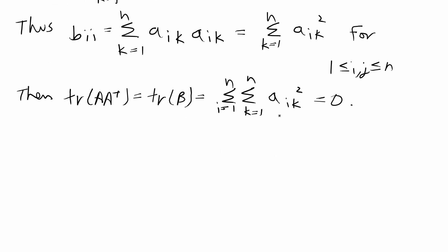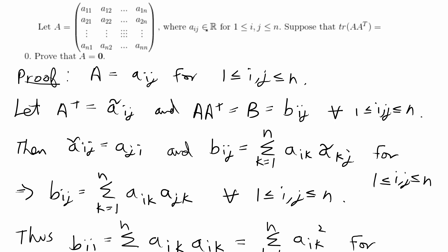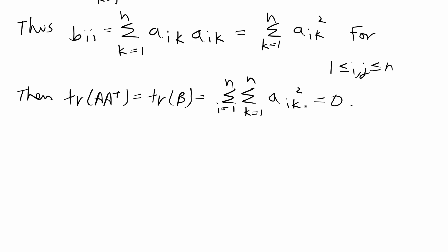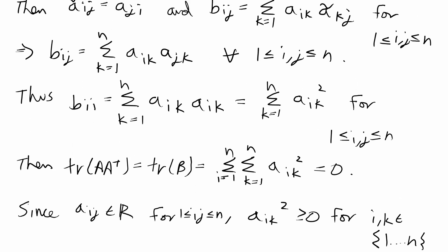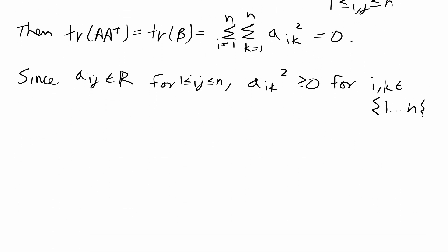From here we have that the sum of all entries A_ik squared has to equal zero. Since every entry of A is a real number, one property of real numbers is that squaring a real number gives a result greater than or equal to zero. So A_ik squared has to be greater than or equal to zero for any i, k between 1 and n. From this we can get our final proof that every entry equals zero using the squeeze theorem.